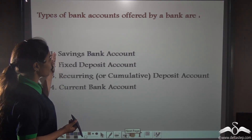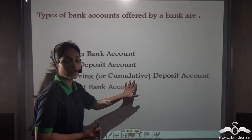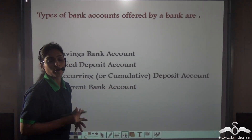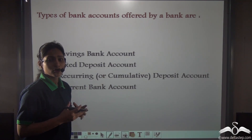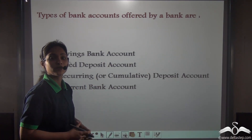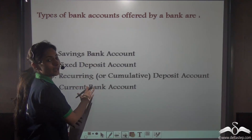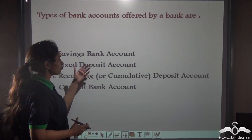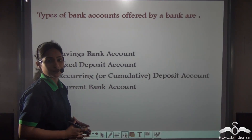The banks offer us savings bank account, fixed deposit account, recurring or cumulative deposit account, or current bank account. We were talking about depositing money and lending loans from the bank in the previous lectures. So if you want to deposit money and you go to the bank, will they just take it? No — you have to first select any one of these accounts you want to deposit your money in. So let us know what these accounts actually are and how do we select them.